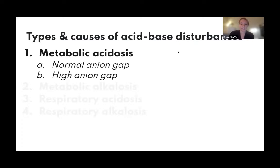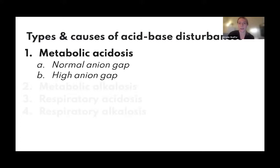Metabolic acidosis occurs when there's increased acid production, we lose too much bicarb, or the kidneys are not functioning and the nephrons are not able to excrete acids. If the body can't compensate, the pH will be less than 7.35.